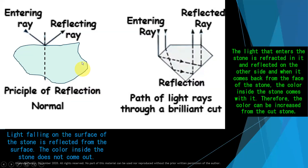Look at this rough stone. When the light rays come here, it is reflecting. This is the reflecting ray and this is the entering ray — it will reflect. We cannot see the correct color of the stone.